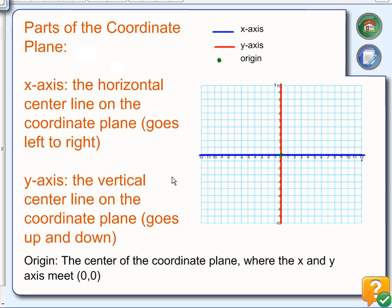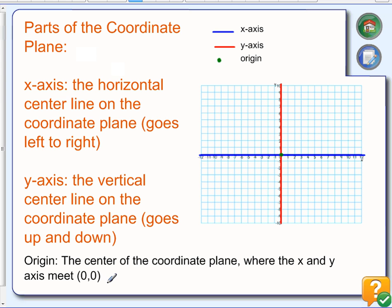Then we have the y-axis, which is the vertical line on the coordinate plane. These two axes will never change — it will always be this way. Last but not least, if you look you have a little green dot there — that is the center of the coordinate plane and it's called the origin. The coordinate points for the origin are always (0, 0).